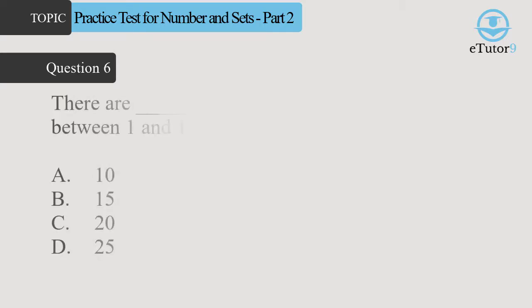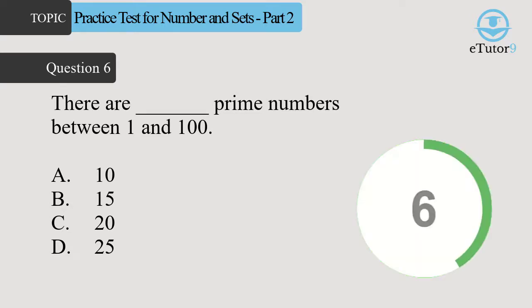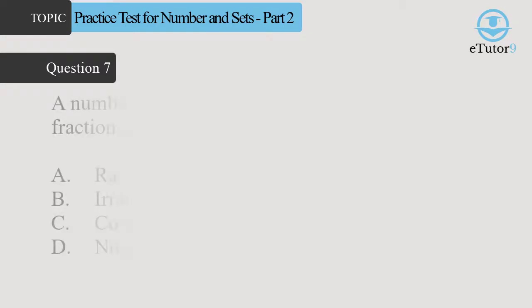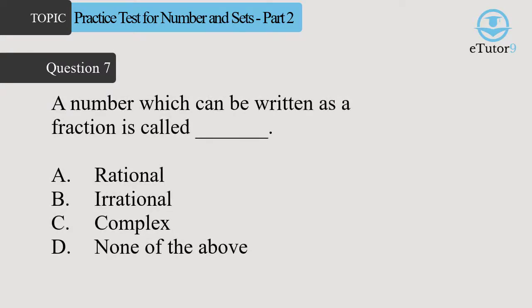Question 6. There are blank prime numbers between 1 and 100. Answer is D. 25. Question 7. A number which can be written as a fraction is called blank. Answer is D. Rational.